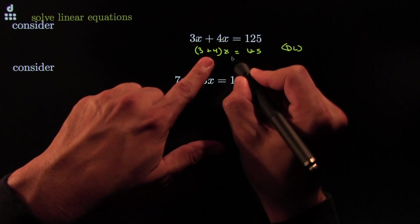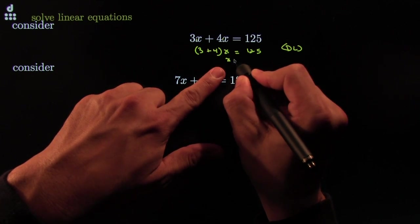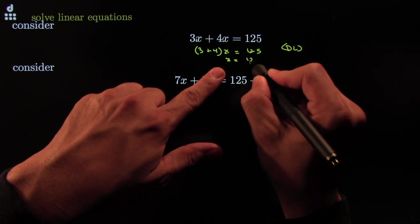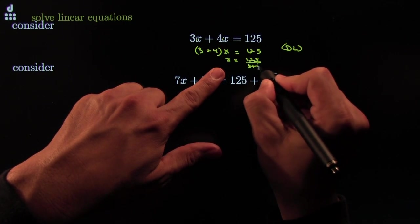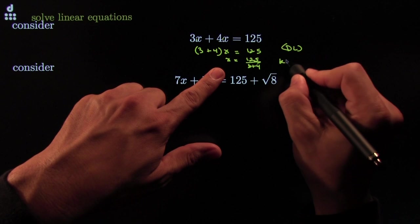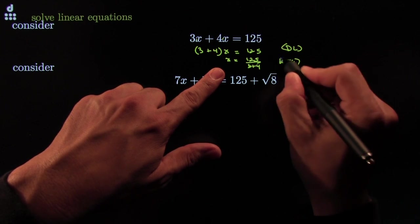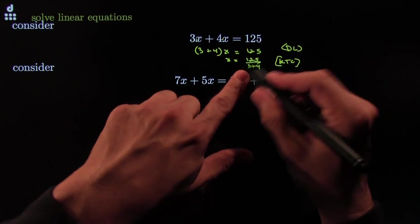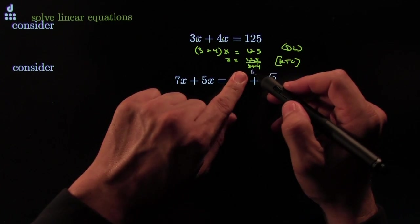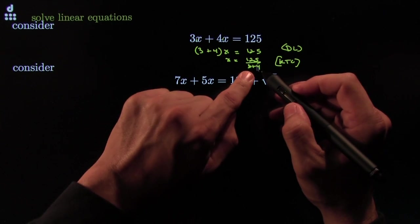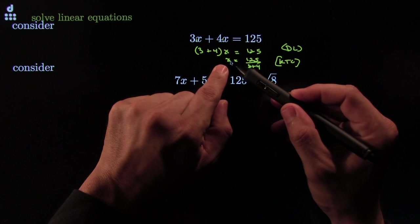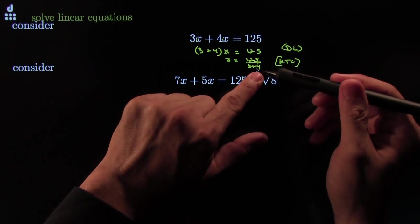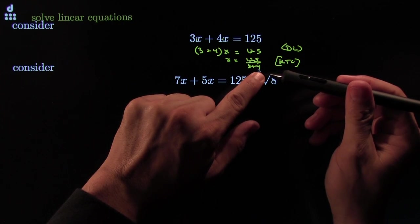The reason you can gather them is because of the distributive law. Now it looks like one coefficient, and you can say x must be 125 all over 3 plus 4. Kill the coefficient, and you are done with that — because x is all by itself on one side and there are no x's on the other side.